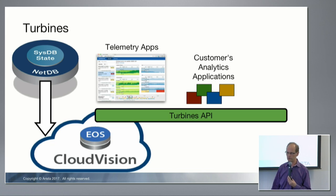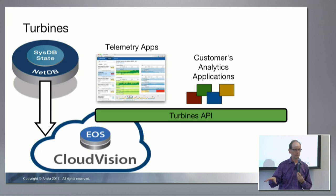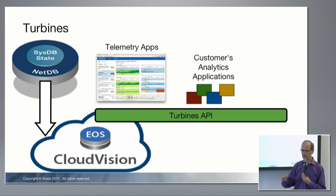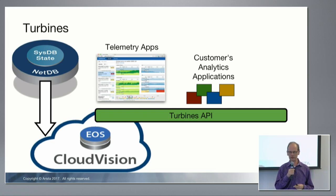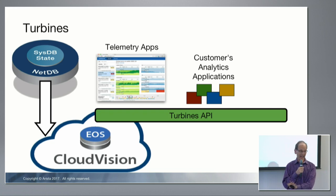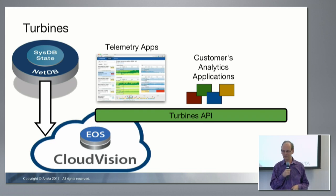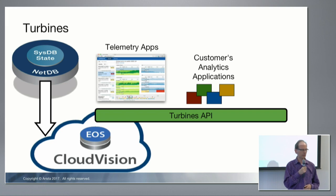This lets customers build on top of the big data platform we've created in CloudVision to do analytics and analysis of the historical state of their networks. This is a little experimental right now — we don't have anybody actually using this yet — but it's a very interesting potential platform.